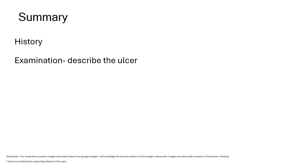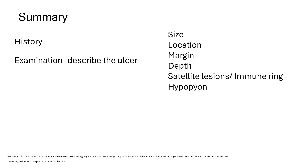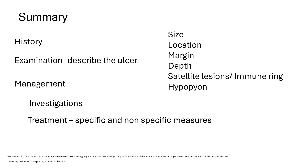Investigations important for exams include Gram stain and KOH mount — you may be asked how to perform them. Treatment covers both specific and non-specific measures. Complications and their management may also be asked — including when to advise keratoplasty in a corneal ulcer. You are not expected to describe every step of keratoplasty but should know when it is indicated.